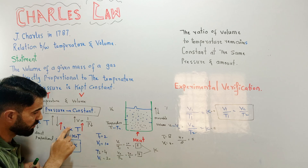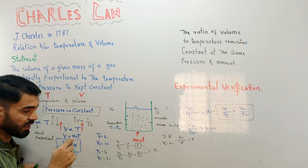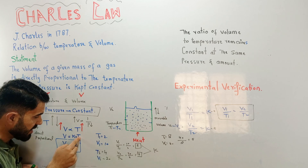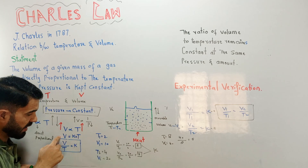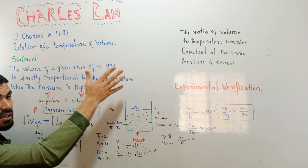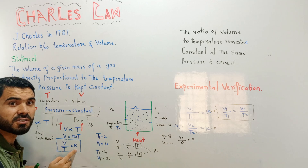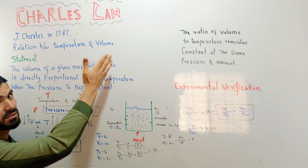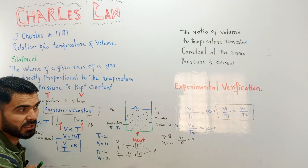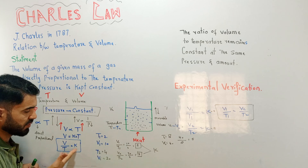Whenever you remove the proportionality sign, it becomes an equal sign plus a constant. So V = KT. Taking T to the left side, V divided by T equals K. This gives us another definition: the ratio of volume to temperature equals a constant quantity K. This is another definition of Charles's Law.